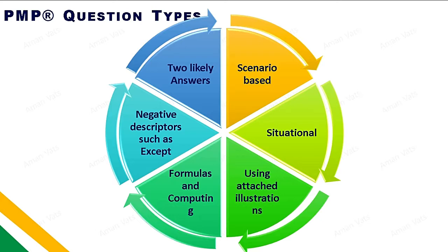Fourth, formula and computing — these are straightforward questions. I'm going to create a dedicated video on formulas and computing. Fifth, negative descriptors such as 'except' — you should be really careful because somewhere in the statement there will be a negative word like 'except' or 'not', and you must understand exactly what is being asked.